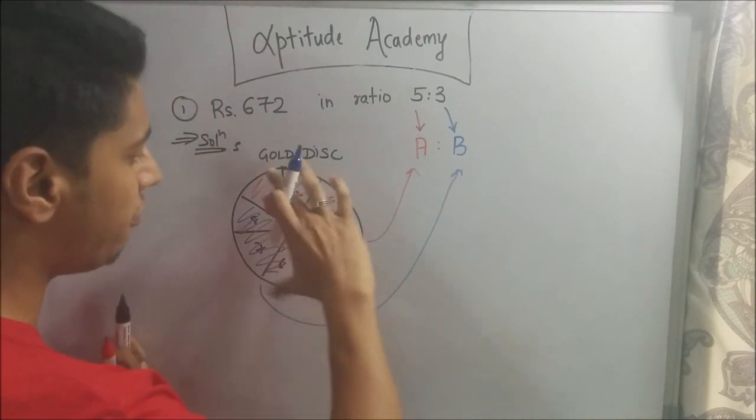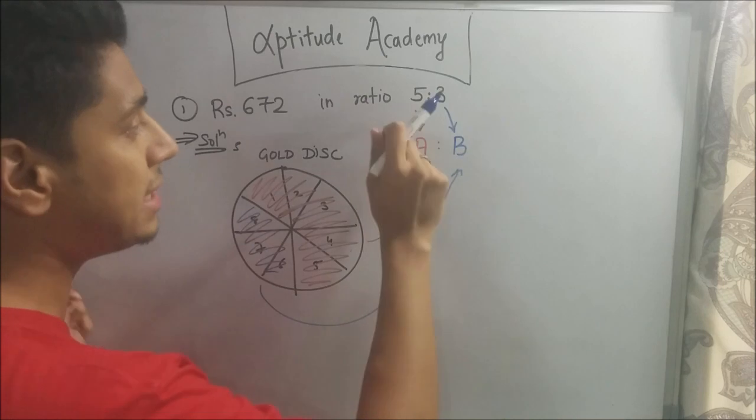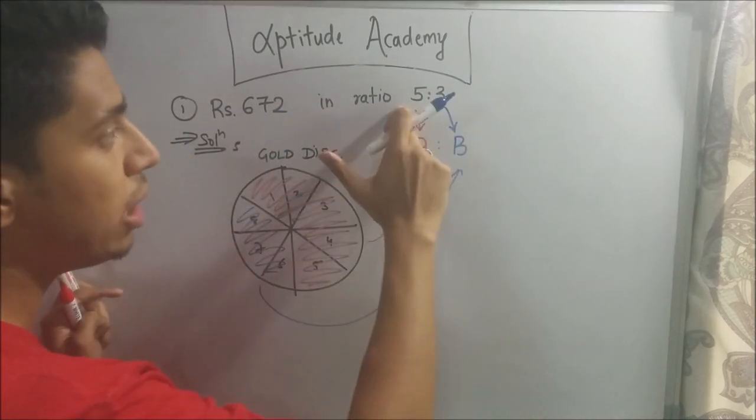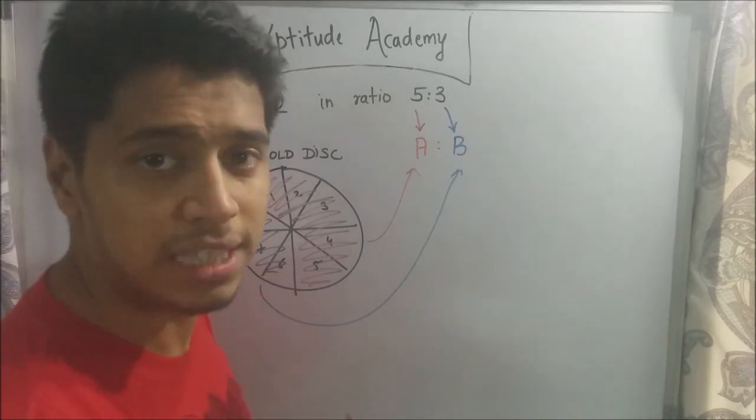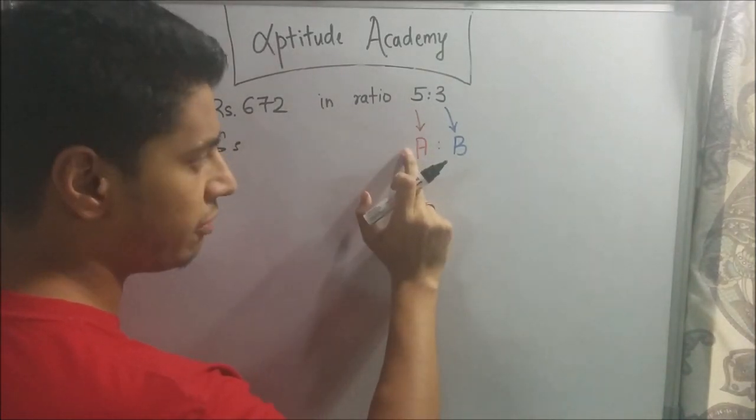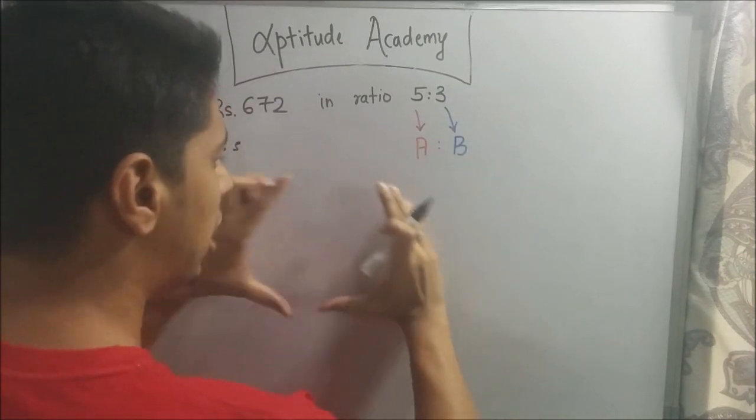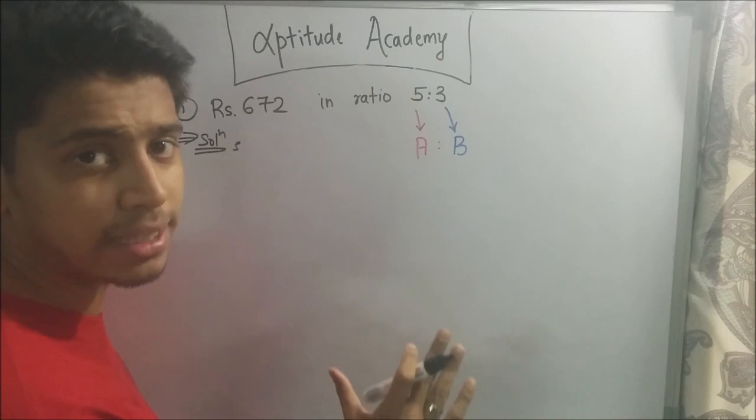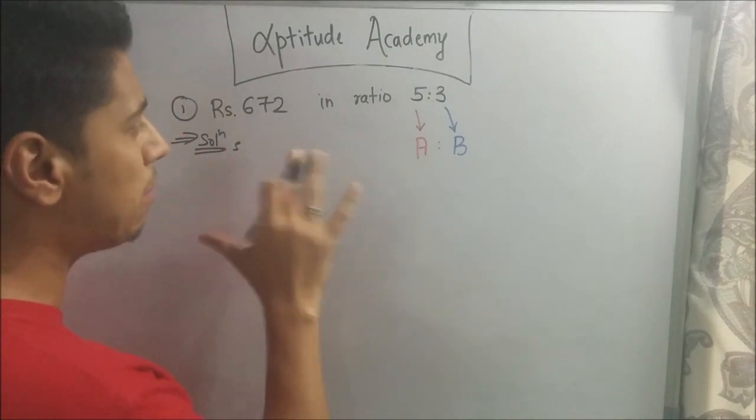So, technically they have got 5 parts is to 3 parts, which is the same ratio 5 is to 3. So, this is how I have divided 672 into 5 is to 3. Now, let's see how to solve this sum. We know that if we add the pieces, 5 pieces of A and 3 pieces of B, and we get it all together, we will get the entire circle, the disk, that is equal to 672.